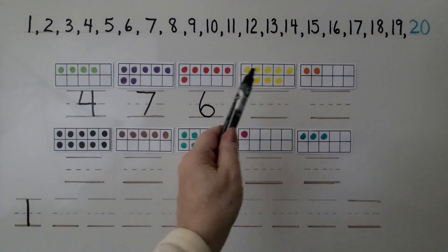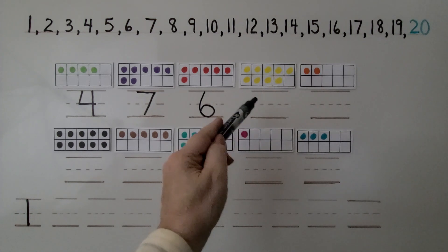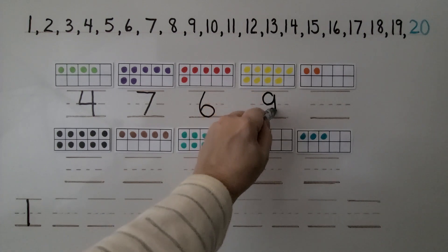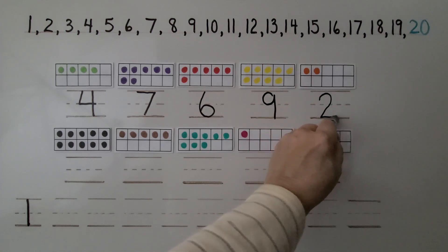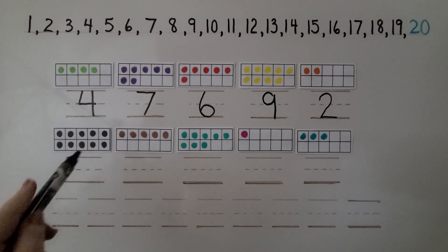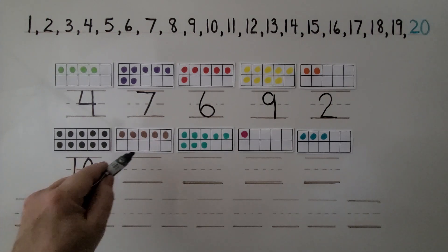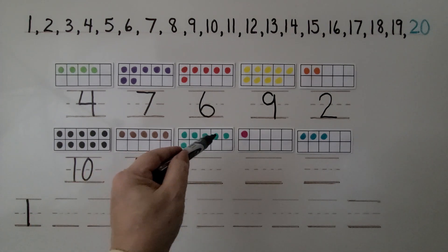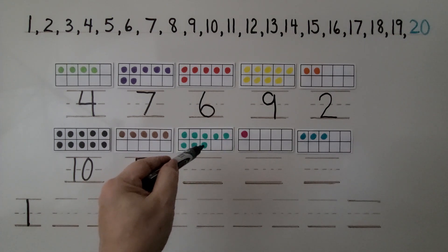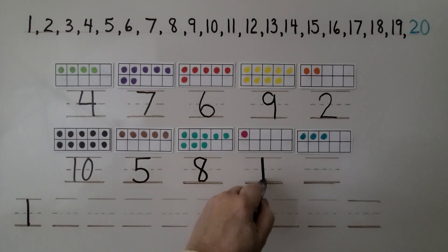Here, the 10 frame is almost full, but 1 is missing. That means it's 1 less than 10. This must be 9. And this one, I can see there are 2. We can write a 2. For this one, I see the 10 frame is completely full. That's 10. Here, I see the top row is full. That's 5. Here, the top row is full. So that's 5, 6, 7, 8. Here, I see a 1. Here, I see 3.